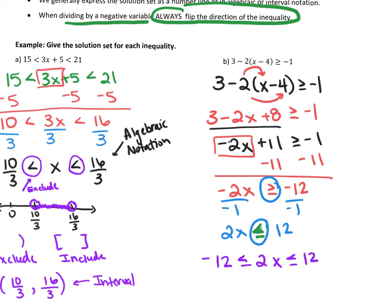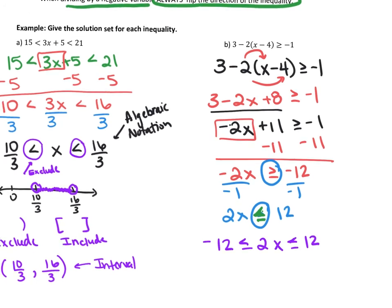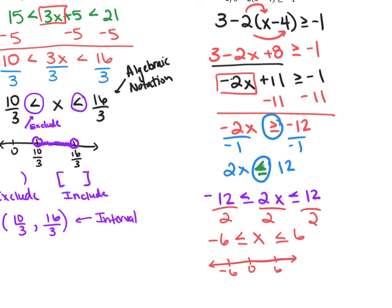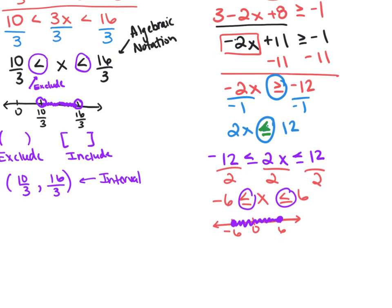As we continued working the problem, the sign had to flip because we divided by a negative, so now we're at an and problem. We do whatever we do to the middle to both sides, so we divide both sides by 2, and we get negative 6 less than or equal to X, which is less than or equal to 6. That's the algebraic notation. Notice our symbols say to include, so we draw closed circles and shade in between. The interval notation uses brackets: [negative 6, positive 6].